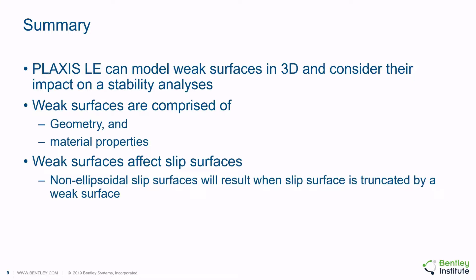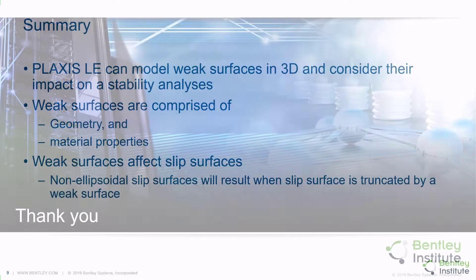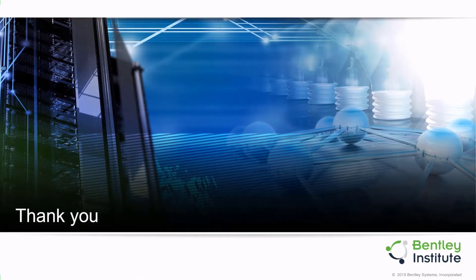In summary, Plaxis LE can model weak surfaces in 3D slope stability analysis. Weak surfaces are comprised of geometry which may be planar or defined by an uneven surface using a mesh or grid, as well as material properties which may be assigned to a weak surface. Weak surfaces can affect slip surfaces and it's possible that an ellipsoid type of surface will be truncated by a weak surface and result in a more critical sliding mass. Thank you so much for your time; this concludes the session on the modeling of weak surfaces in the Plaxis LE software.